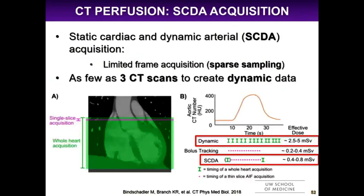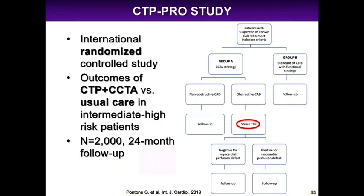Research being done here at UW by Dr. Branch includes SCADA acquisition — a combination of static and dynamic acquisition that achieves quantitative analysis with only three scans, reducing radiation from 2.5–5 millisieverts all the way down to about 0.5 millisieverts, a 5 to 10-fold decrease. UW is also involved in the CT perfusion PRO study, an international randomized controlled trial looking at outcomes of patients who received CT perfusion in an intermediate-to-high risk population — a two-year study with 2,000 patients, results pending.